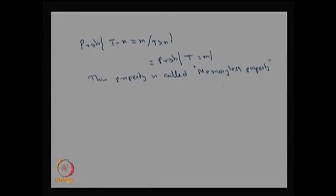Just as the binomial distribution arises from the Bernoulli process and the geometric distribution from the first arrival time, one can also derive the Pascal distribution, also called the negative binomial distribution. Instead of T being the number of trials to get the first success, define a new random variable for the number of trials needed to get the r-th success (r ≥ 1). If r > 1, this leads to the negative binomial distribution; if r = 1, it reduces to the geometric distribution, same as T.